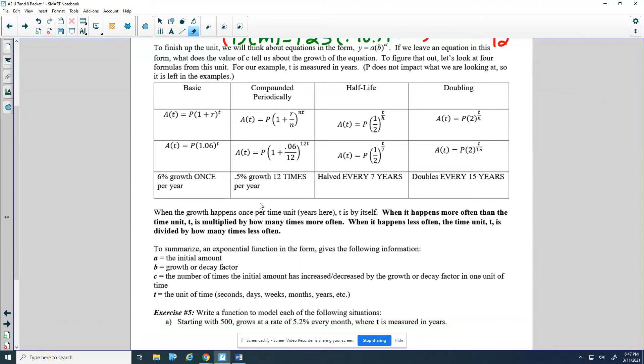For our last set of problems, we will think about equations in the form y equals a times b to the ct. All of those equations we actually did in the beginning of this section ended up in this form, with a base and then we had a number times t outside. If we leave an equation in this form, what does the value of c tell us about the growth of the equation?